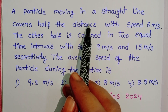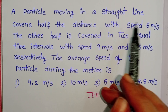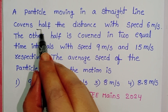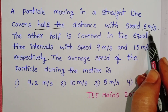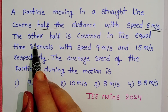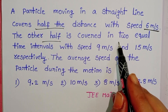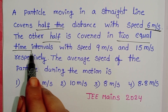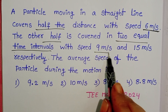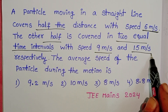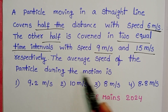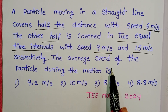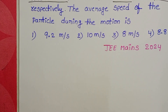A particle moving in a straight line covers half of the distance with a speed of 6 meters per second. The other half is covered in two equal time intervals with speeds of 9 meters per second and 15 meters per second respectively. The average speed of the particle during the motion is to be found.